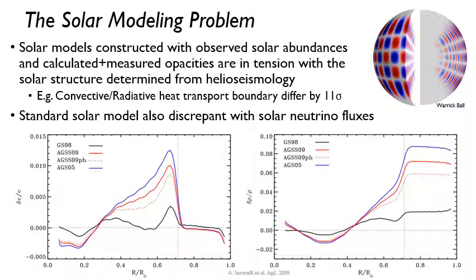An example of the kind of problem that uncertainties in oscillator strengths — and therefore opacities — can cause is an issue with understanding our own sun, potentially. There's something called the solar modeling problem. You construct a standard solar model using the physics we've covered: hydrostatic equilibrium, nuclear physics, and the atomic physics from the past few quick notes.